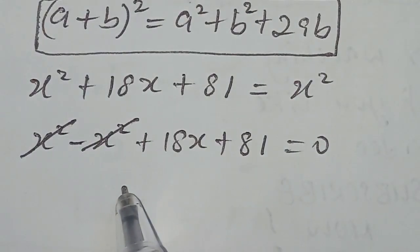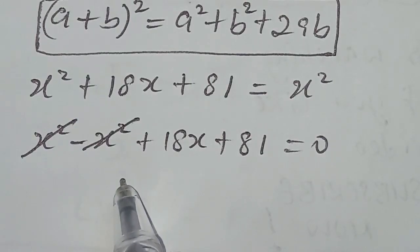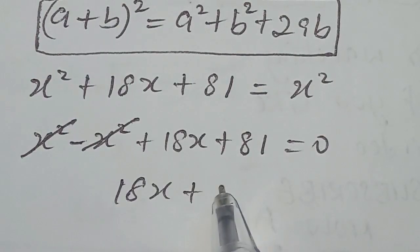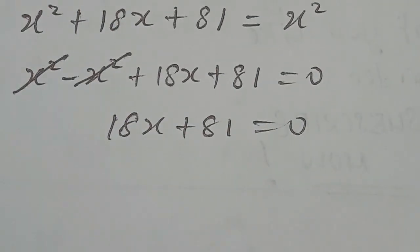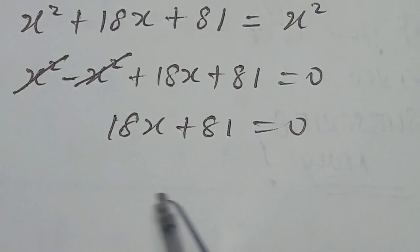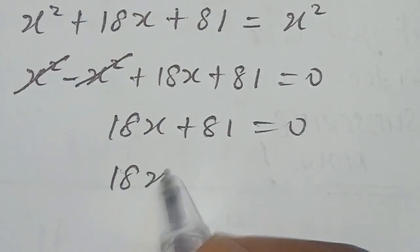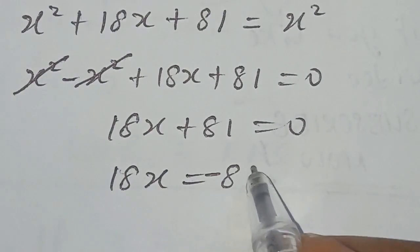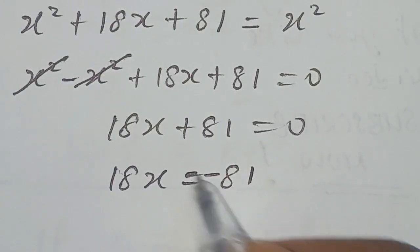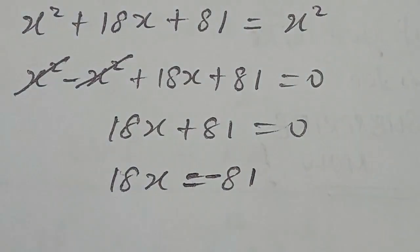And we are left with, at the left-hand side, 18x plus 81 equal to 0. So, let's move this 81 back to the right-hand side. We have 18x equal to minus 81.